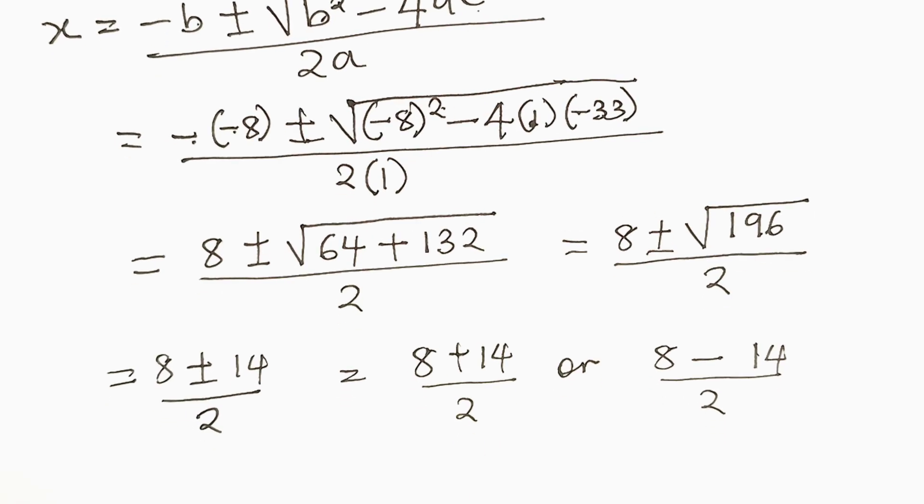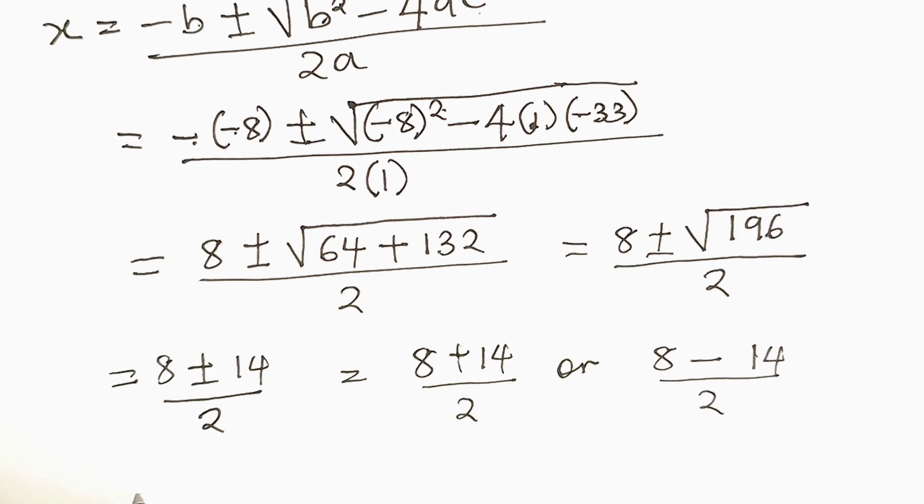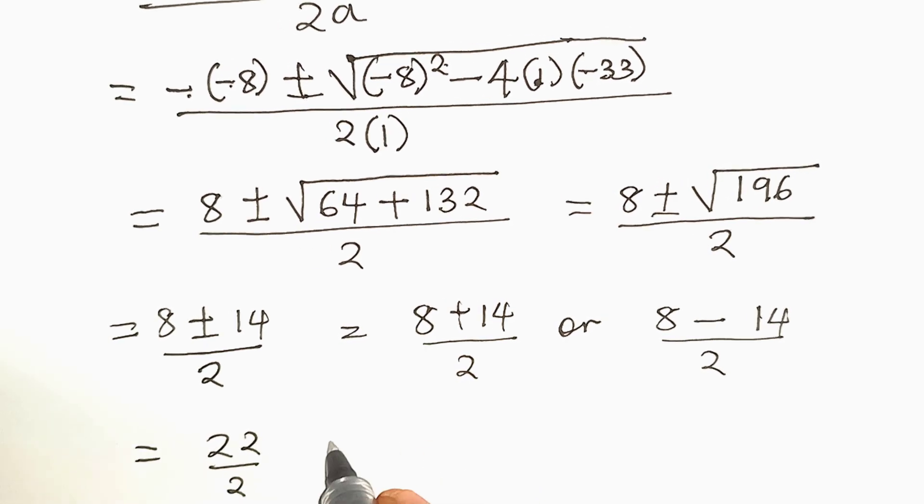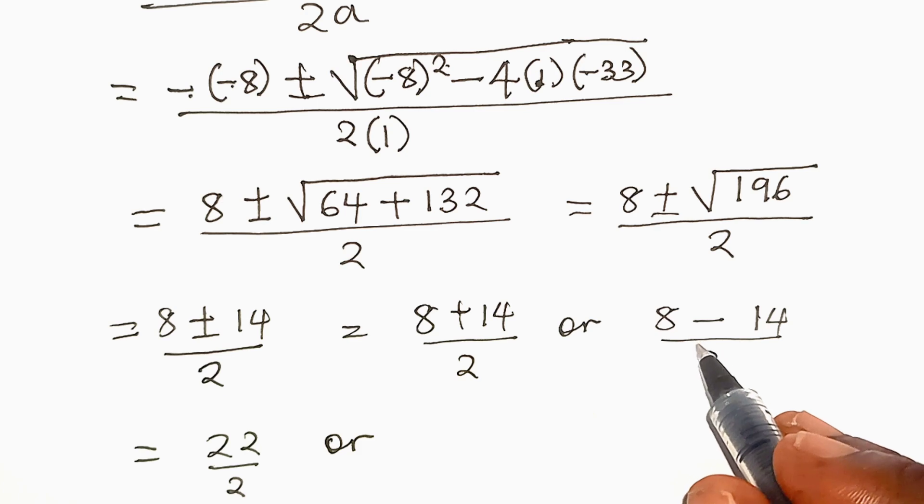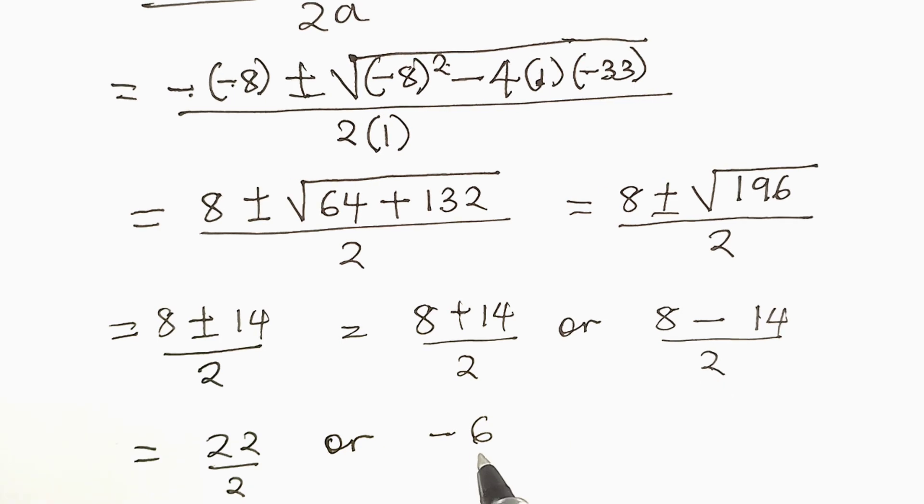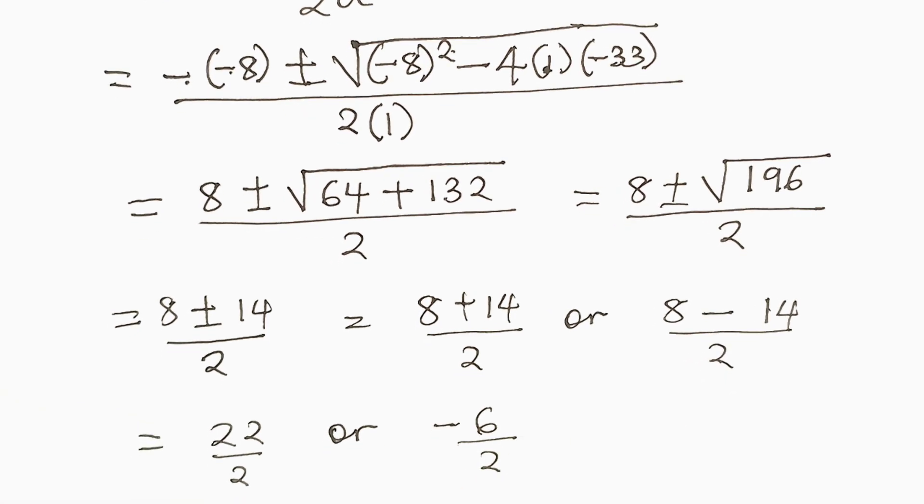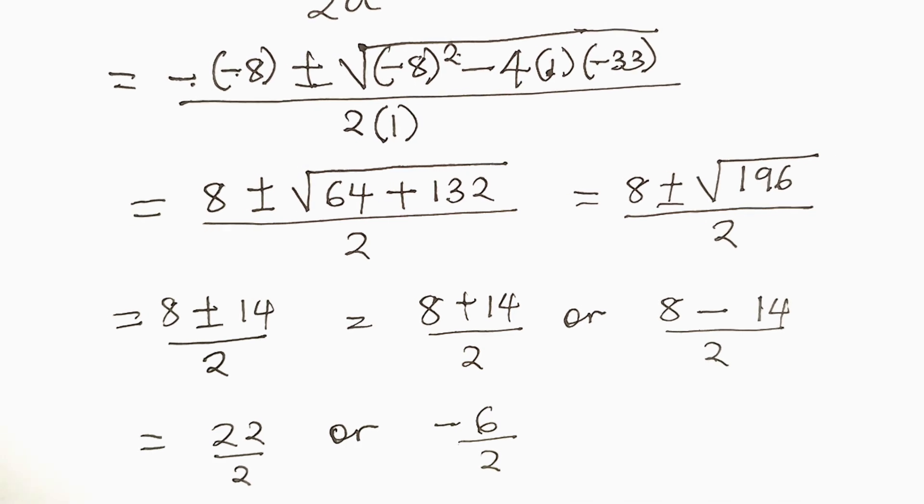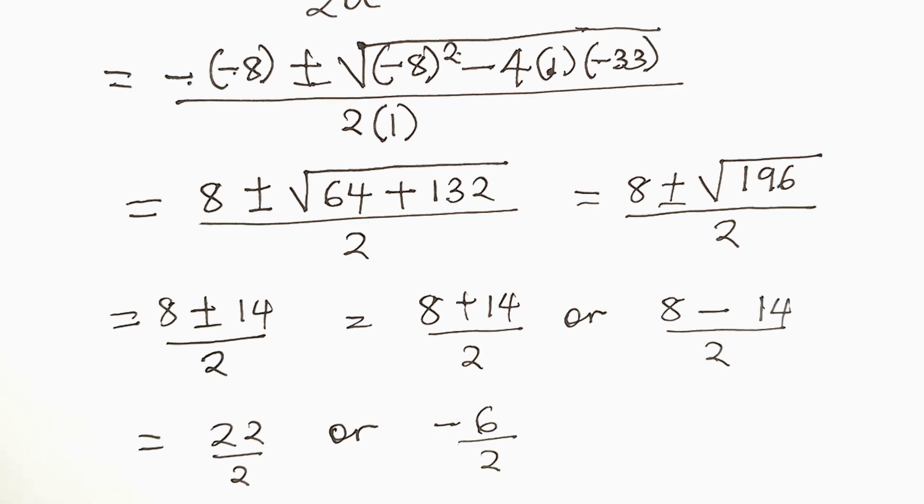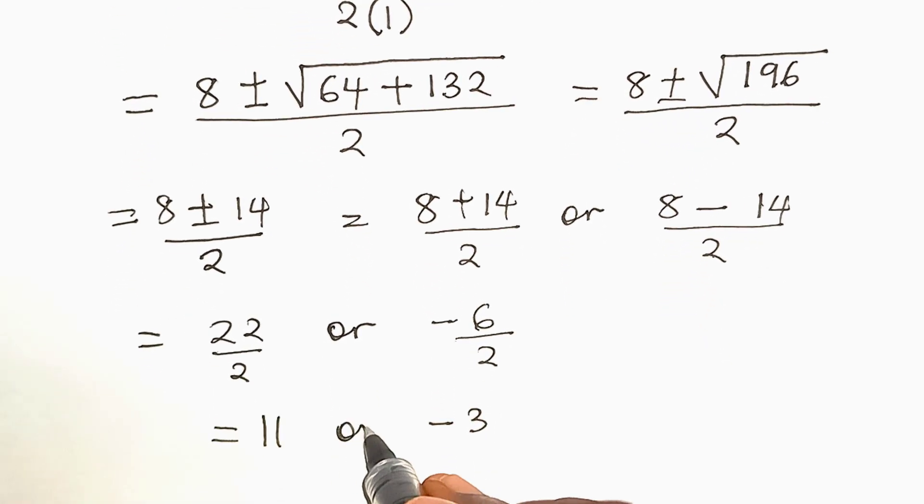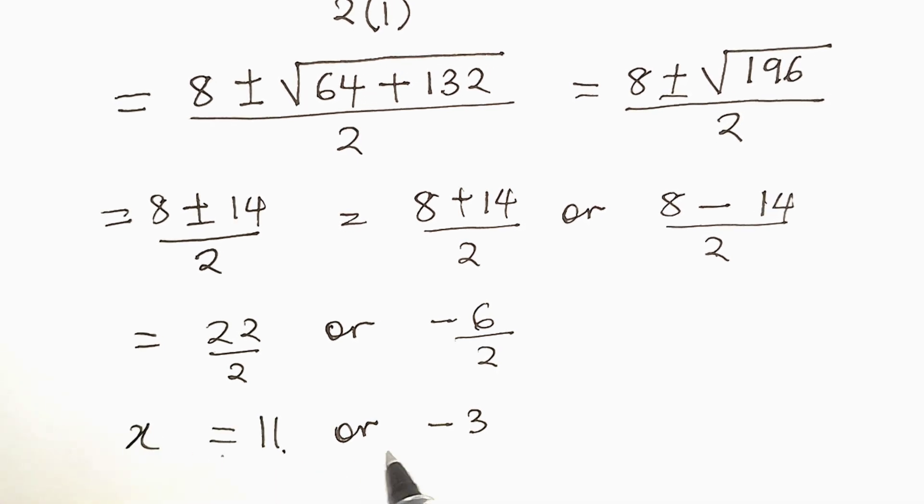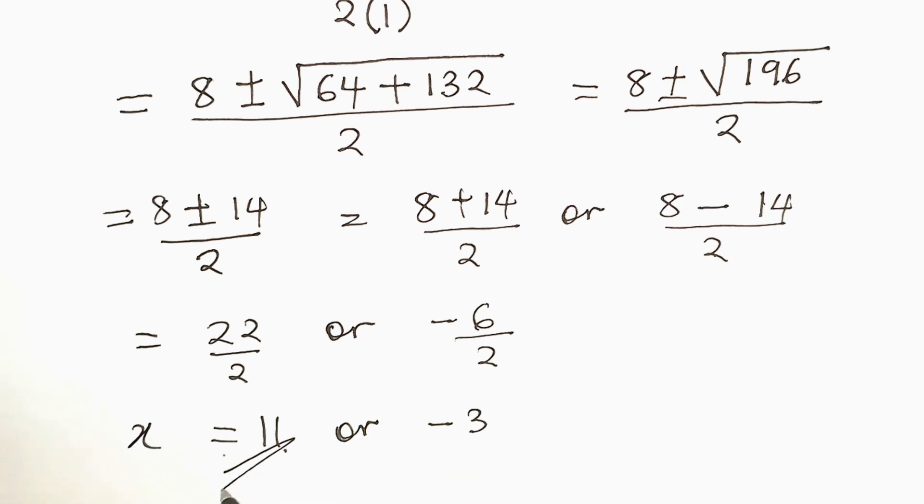So this will be 8 plus 14 all over 2 or 8 minus 14 all over 2. So if we add here we will have 22 divided by 2 or here if we subtract 8 minus 14 is minus 6 divided by 2. So that gives us 22 by 2 is 11 and minus 6 divided by 2 is minus 3. So the roots of the equation are x equal to 11 or x equal to minus 3.